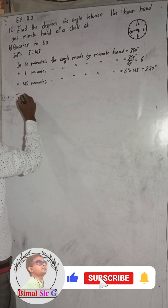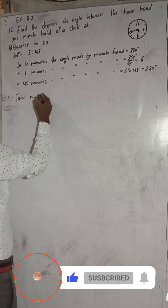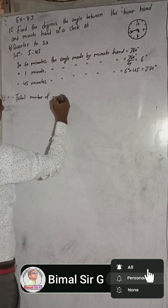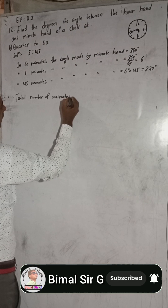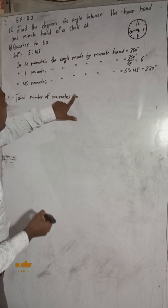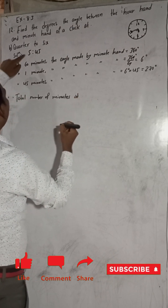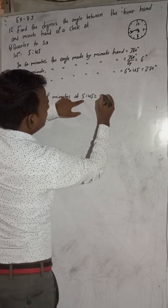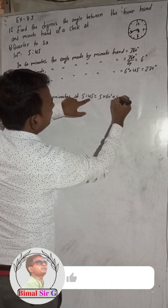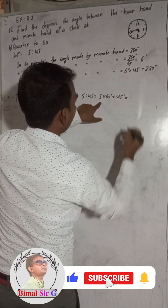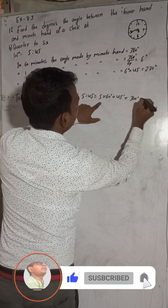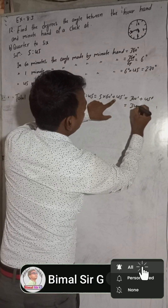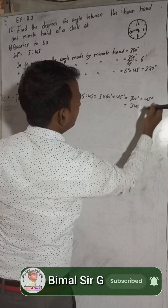Now we find the total number of minutes at 5:45. At 5:45, the total minutes elapsed is 5 into 60 minutes plus 45 minutes. That is 300 minutes plus 45 minutes, which equals 345 minutes total.